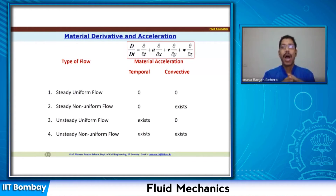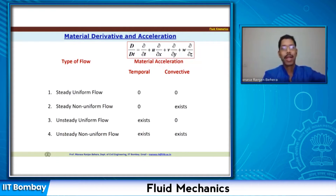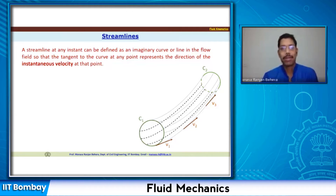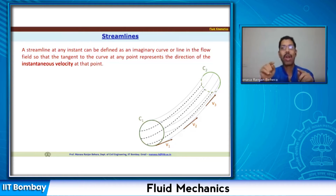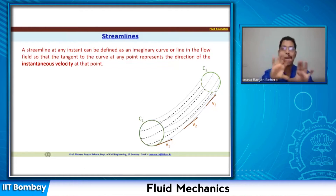Now let us understand how we define various flow lines. We will look at streamlines, path lines, and streak lines. Let us first understand streamlines, which are very important with many applications. A streamline at any instant can be defined as an imaginary curve or line in the flow field.